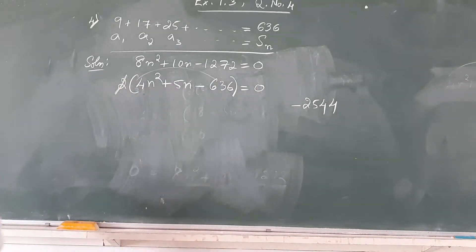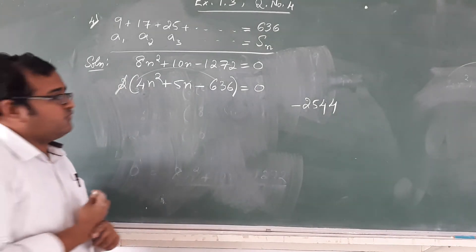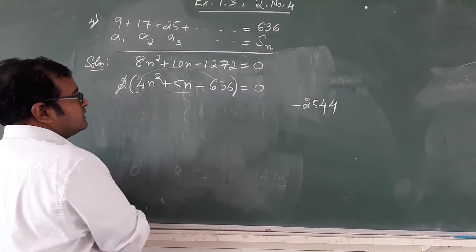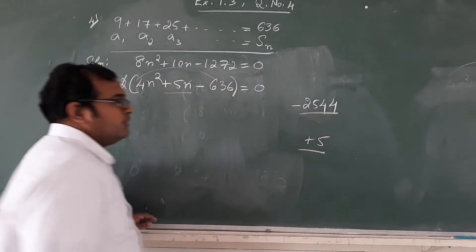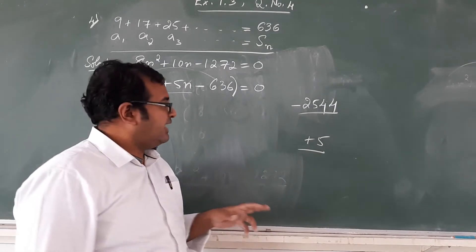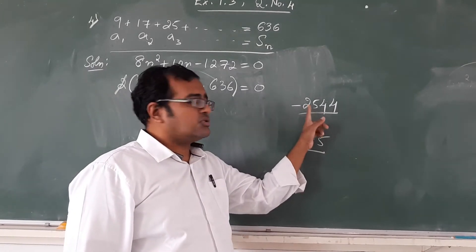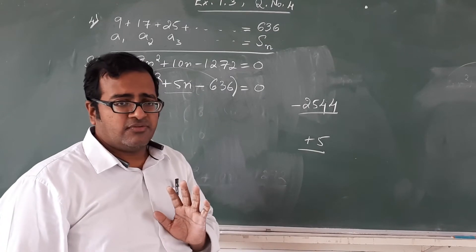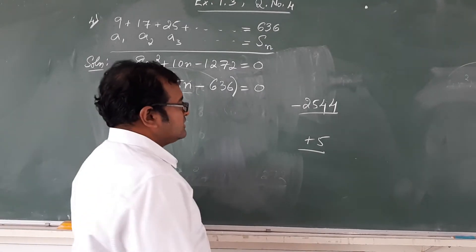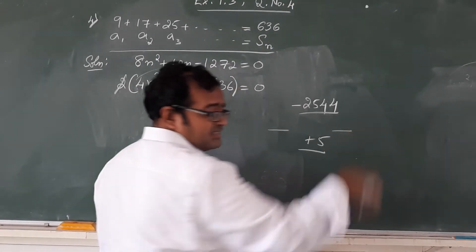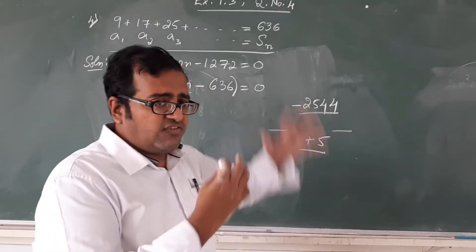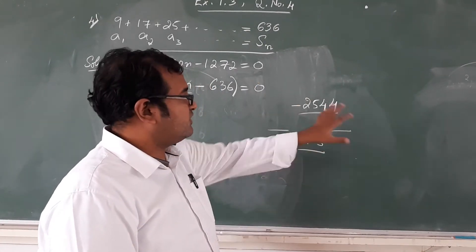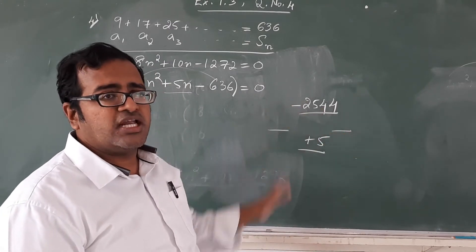The middle term being plus 5, so we need two factors such that the multiplication should be 2544 and the addition should be plus 5. Their sum should be plus 5. So such numbers when we factorize and see, when we factorize we find that, now this you will have to do on your own, factorization you will have to try. We will get 53 as a prime number on one side and 48 as the other number.